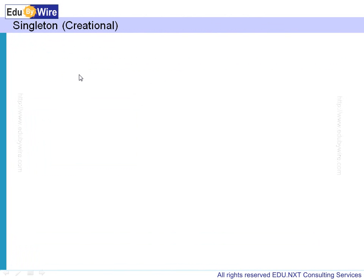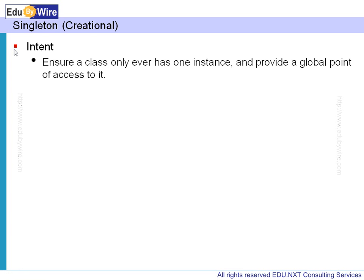What we saw just now was the Singleton pattern as defined by the Gang of Four, and it comes into the category of creational design patterns. The intent behind the Singleton design pattern is to ensure a class only ever has one instance and provide a global point of access to it — which is exactly what we did. We ensured that logger ever has only one instance, with a public global point of access: logger.getLogger, the static method on the logger class.